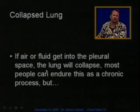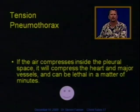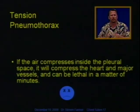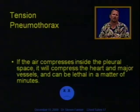If air or fluid gets into the pleural space, the lung can collapse. Most people can endure this as a chronic process, but something important to keep in mind is the concept of a tension pneumothorax. If air compresses in the pleural space and has no way of getting out — and we continue to add air with each breath — this is going to compress the heart and the major vessels.